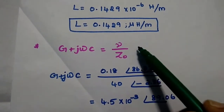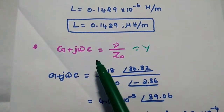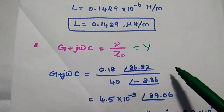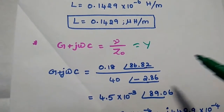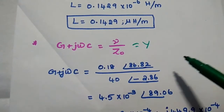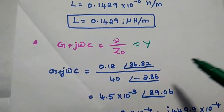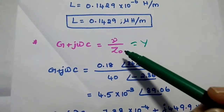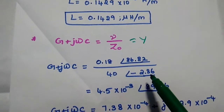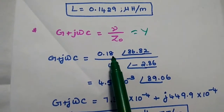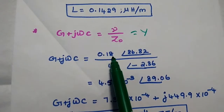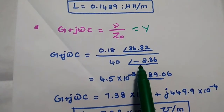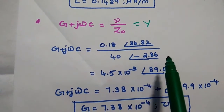Next, using the formula Y equal to gamma divided by Z naught, equal to G plus J omega C. When dividing two values in rectangular form, we must use their polar form. The polar form of gamma is 0.18 with angle 86.82 degrees, and Z naught is 40 with angle minus 2.86 degrees.